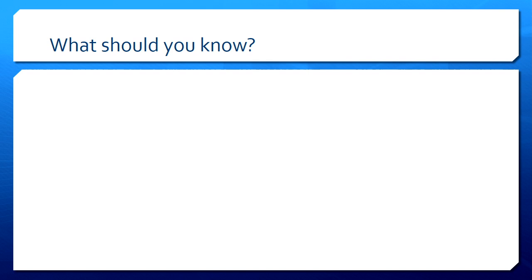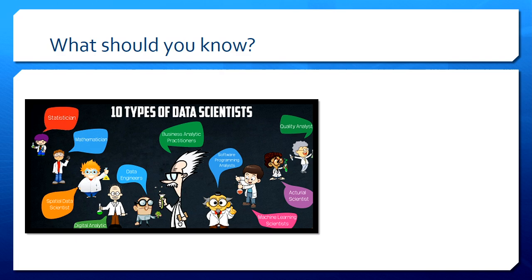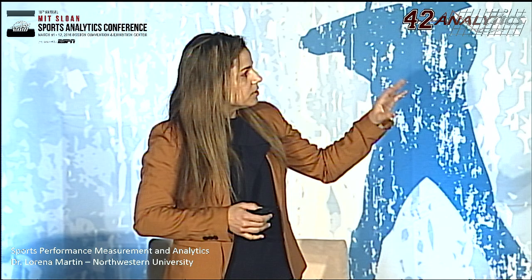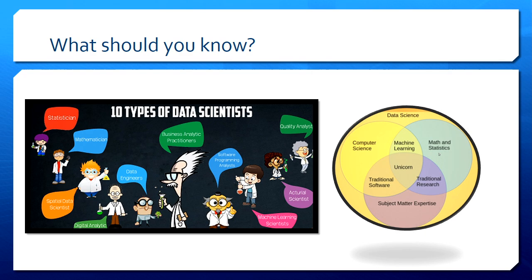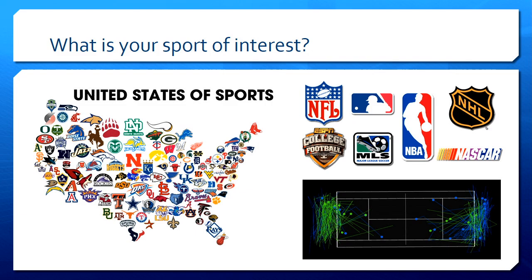So what should you know? Many of us are different types of data scientists — from the statistician to the mathematician to the machine learning scientist. We all have some training in computer science, some more than others in math and statistics, and subject matter expertise. What I will be focusing on today is subject matter expertise, and in this case, we're talking about professional sports.